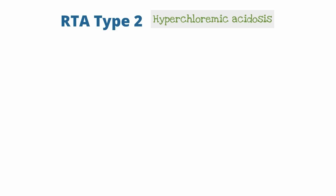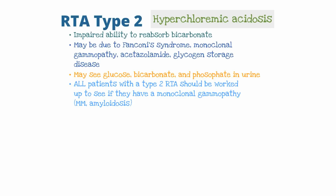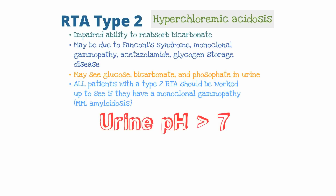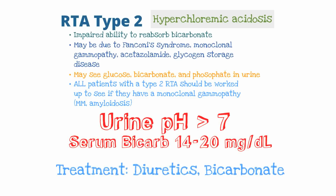Now let's discuss renal tubular acidosis type 2. RTA type 2 also presents with a hyperchloremic metabolic acidosis. The dysfunction is an impaired ability to reabsorb bicarbonate specifically in the proximal tubule. RTA type 2 can be due to Fanconi syndrome, monoclonal gammopathies such as multiple myeloma or amyloidosis, medications like acetazolamide, and glycogen storage diseases.